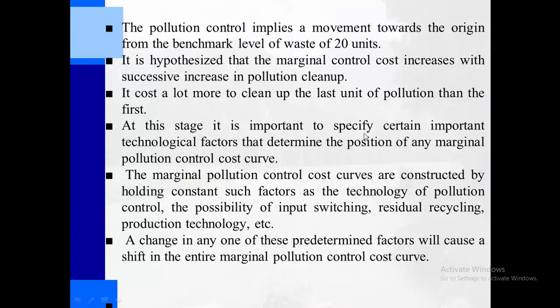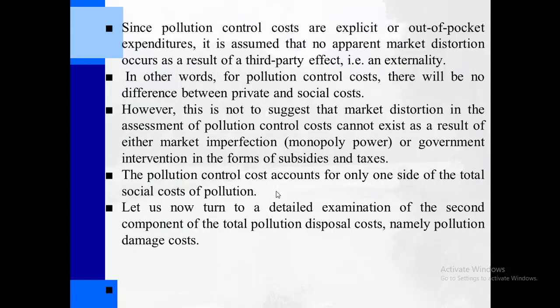At this stage, it is important to specify certain important technological factors that determine the position of the marginal pollution control cost curve. The marginal pollution control cost curves are constructed by holding constant such factors as the technology of pollution control, the possibility of input switching, residual recycling, and production technology. A change in any one of these predetermined factors will cause a shift in the entire marginal pollution control cost curve. Since pollution control costs are explicit out-of-pocket expenditures, it is assumed that no apparent market distortion occurs as a result of third-party effects — externality.